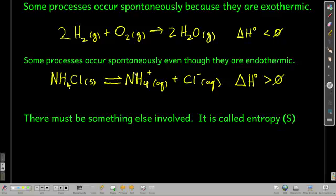But there are some processes that occur spontaneously even though they're endothermic. If you take solid ammonium chloride and dissolve it in water, it feels really cold because this is an endothermic process. Delta H is positive for this, so the enthalpies of the products are higher than the enthalpy of the reactant. So something else must be driving this and that other thing is called entropy, symbol S.